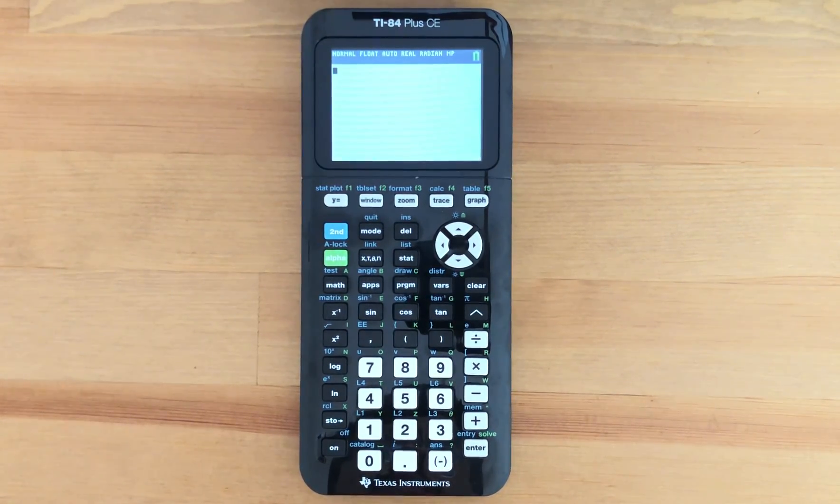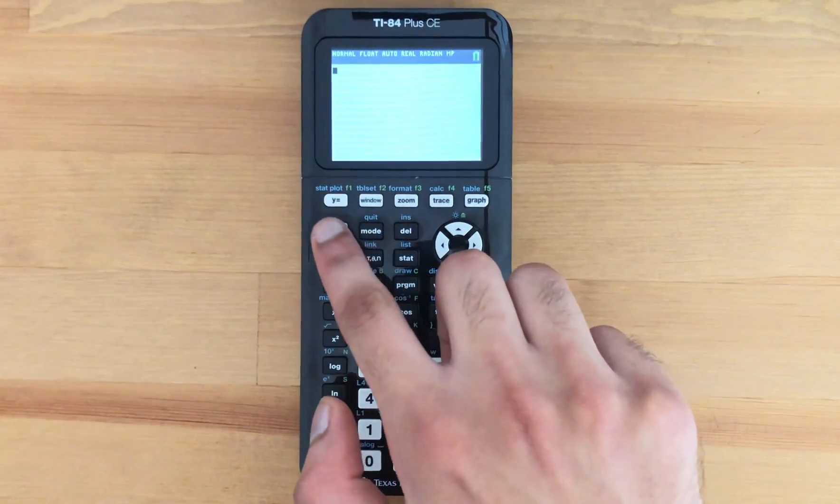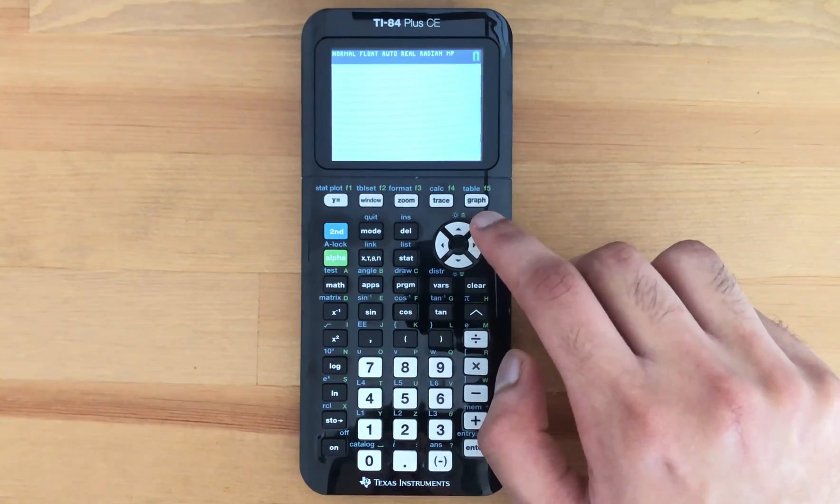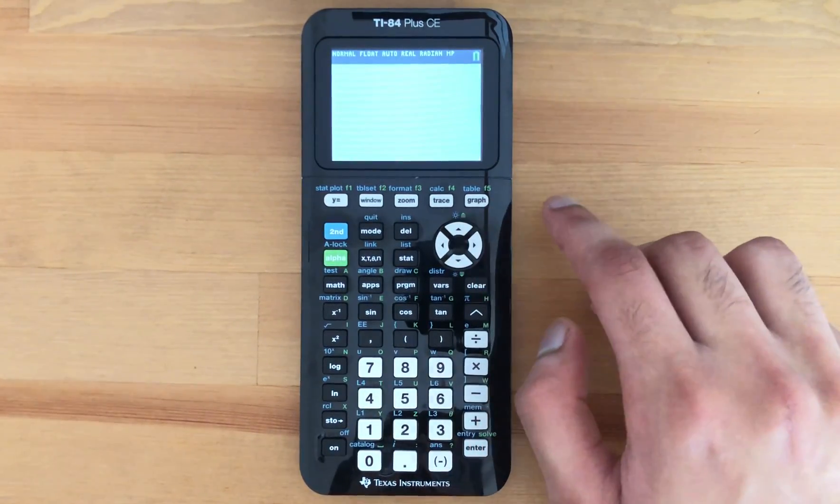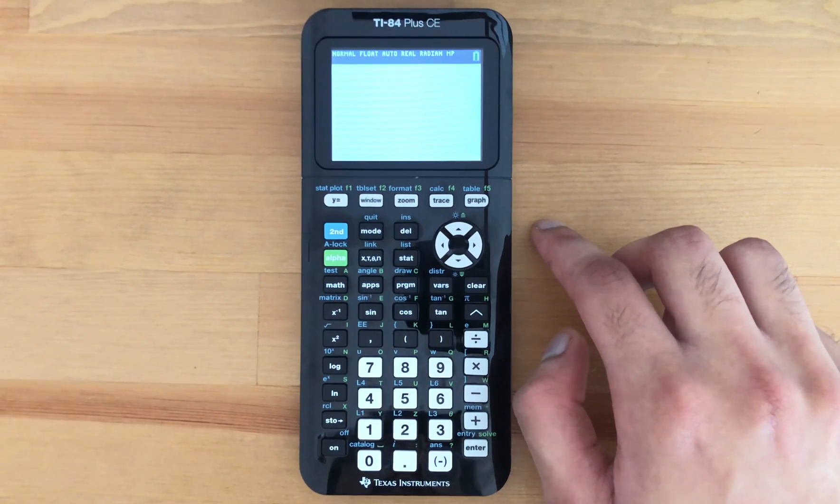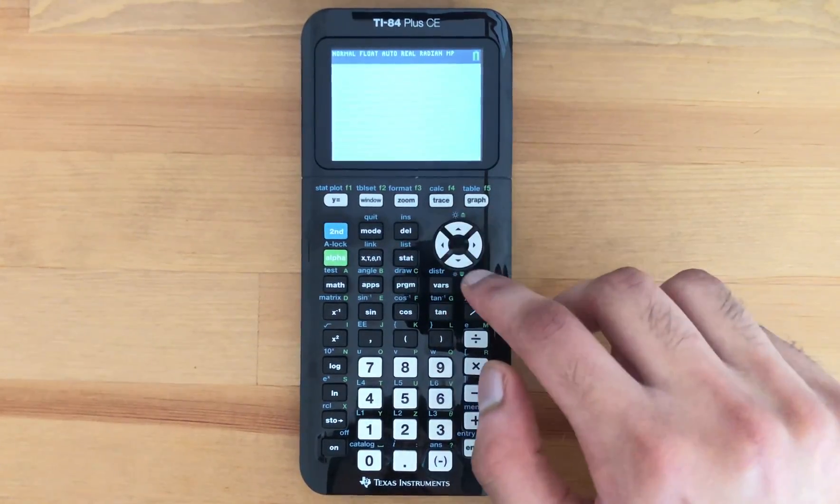So this is fairly simple to do. What you want to do is press 2nd and hold the up arrow if you want to turn up the brightness, and if you want to turn down the brightness you press 2nd down.